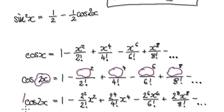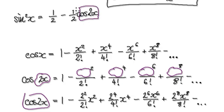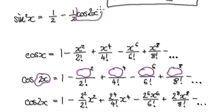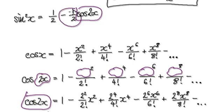So that will then give us cos of 2x. And then later on we need to multiply by negative a half, and then later on we're going to add a half. So we are currently here at the moment. Now we need to times it by negative a half.